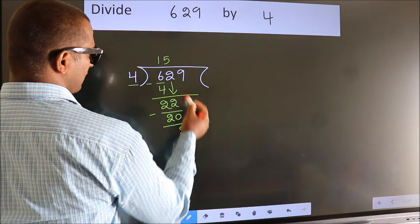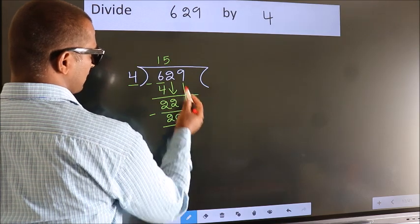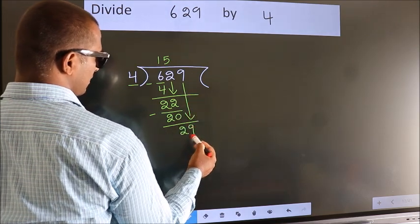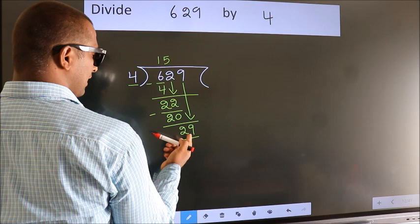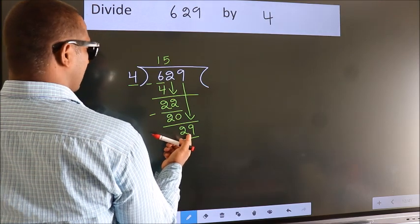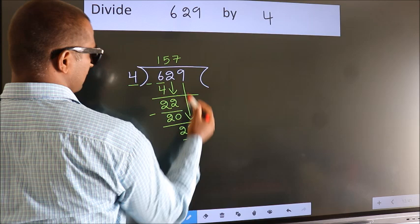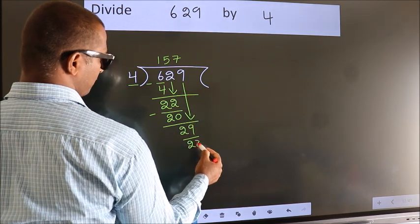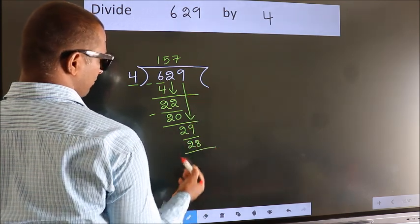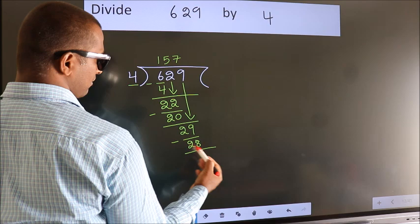After this, bring down the beside number. So 9 down. So 29. A number close to 29 in 4 table is 4 sevens, 28. Now we subtract. We get 1.